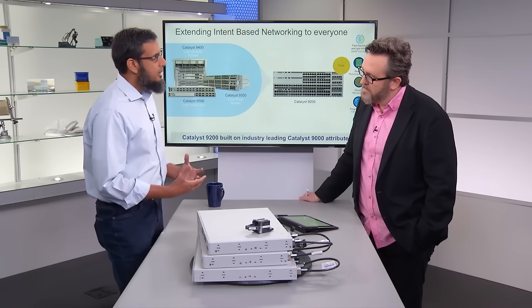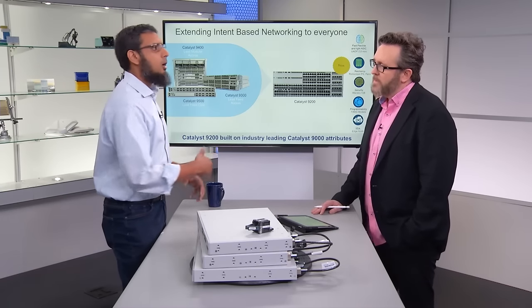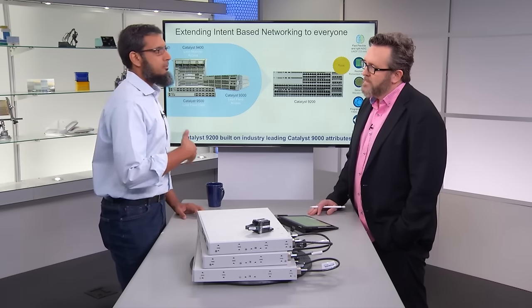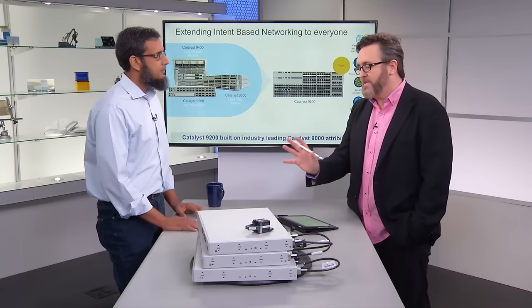On the IOS XE operating system side, the same IOS XE that runs on the rest of the Cat 9K family is being extended to the Cat 9200 and 9200L. However, since these are smaller boxes with smaller footprints, we have a smaller image optimized for the smaller memory footprint on the Cat 9200 — the same image goes on both 9200L and 9200. This brings all the capabilities of IOS XE to the 9200 series, including programmability, YANG models, NETCONF, RESTCONF, and all the modularity in how we run processes.